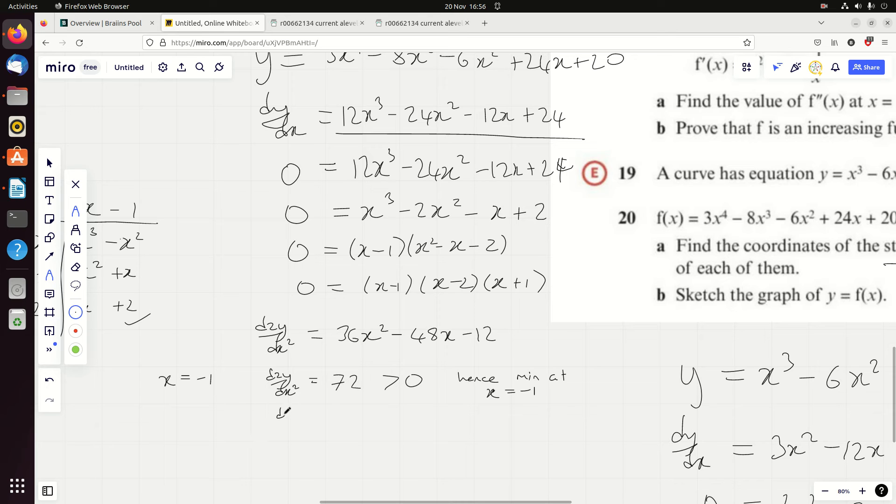I'll work out the y coordinates in a minute. Let's now do the same thing with some of the others. So let's try x equals 1. When we plug in 1, we get 36 minus 48 minus 12, that's minus 24, which is less than 0, so hence a max at x equals 1. And lastly x equals 2. We're going to get 4 times 36, 144, take away 96 is like 48, minus 12 is 36, bigger than 0, hence a min at x equals 2.